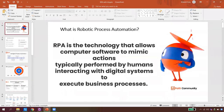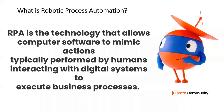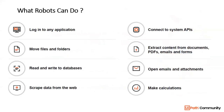Let me pull up a quick background on what we covered last time. We saw what Robotics Process Automation is and how robots are capable of mimicking human actions — logging into applications, connecting to APIs, moving files and folders, opening emails, doing calculations, scraping data, and reading and writing to databases.